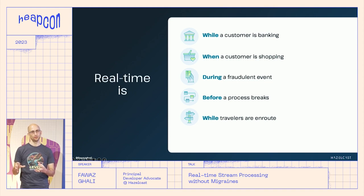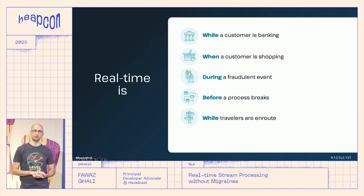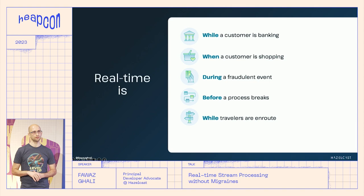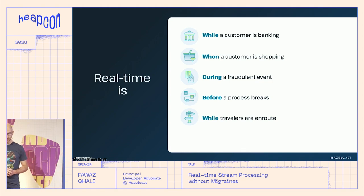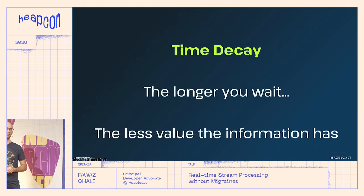In batch processing, you ingest data into your application, store it in a database or file system, load it back, then do analysis or visualization. What we're saying today is: we're going to change how we process data or events or transactions. We want to process it before we store it into a file system or database. This is crucial — we're trying to minimize latency.